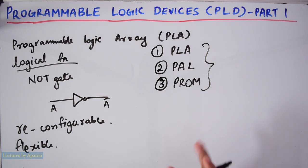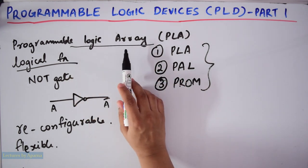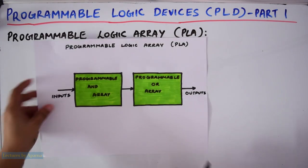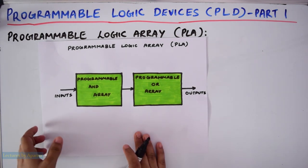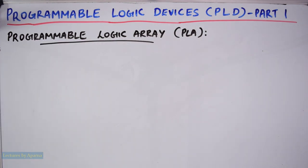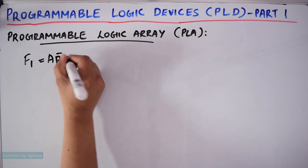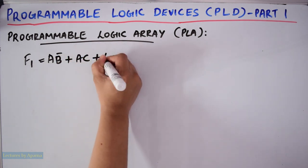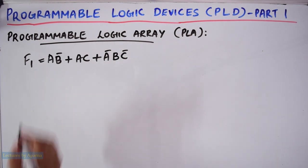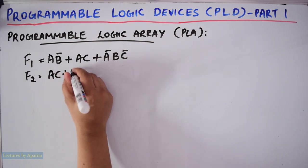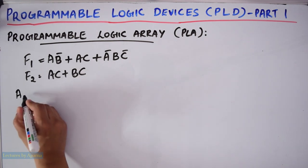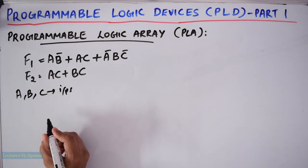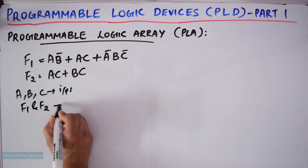Now let us see the first type of PLD — PLA or Programmable Logic Array — in detail. For PLA, both AND array and OR array can be programmed. Let us see how to implement boolean functions using PLA. Consider the boolean functions: F1 = AB̄ + AC + ĀBC̄, and F2 = AC + BC. Here we need three inputs A, B, C and two outputs F1 and F2.